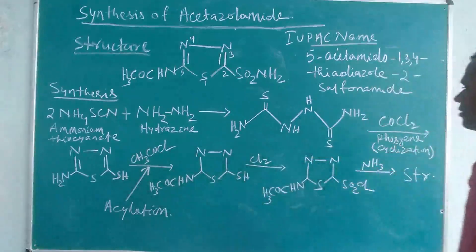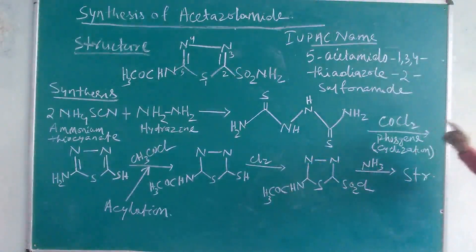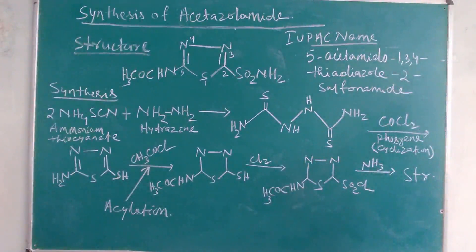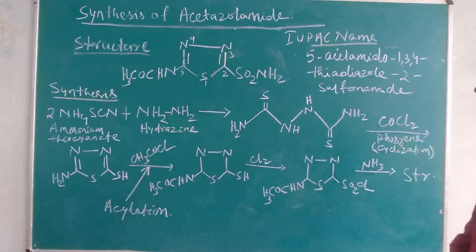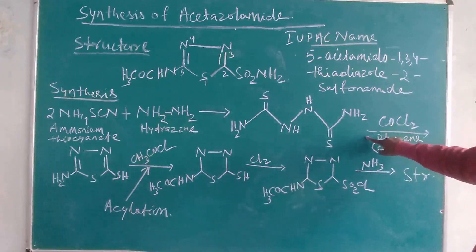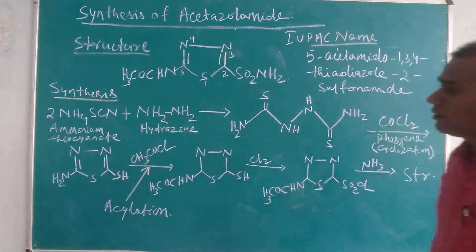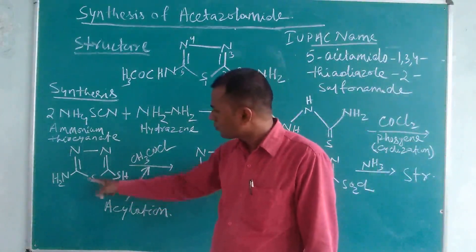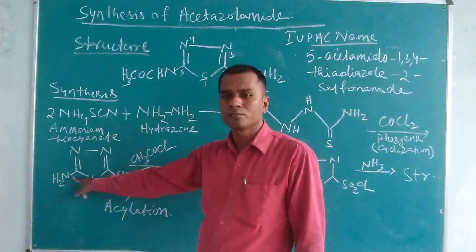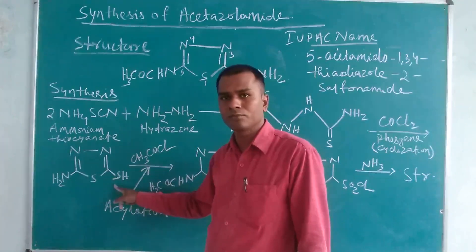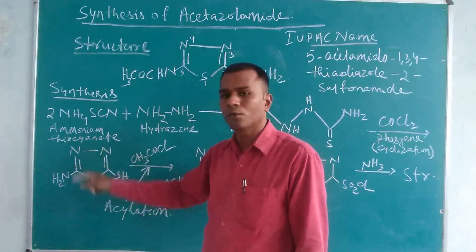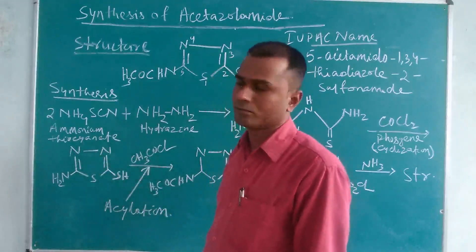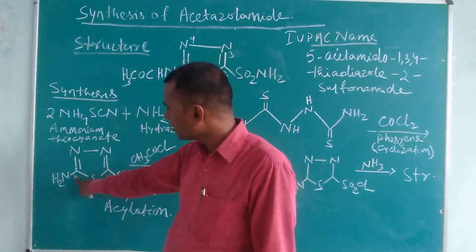This thiosemicarbazone derivative, on reaction with phosgene, undergoes a cyclization reaction. The phosgene drives the cyclization process, giving a cyclic product named 2-amino-5-mercapto-1,3,4-thiadiazole.